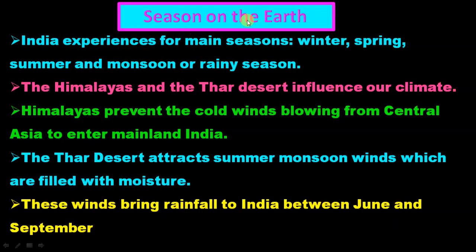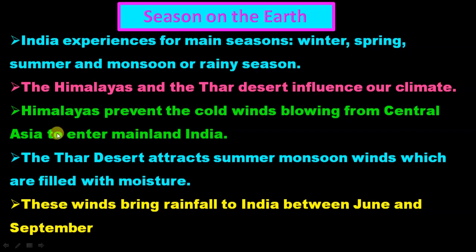Seasons on the earth. India experiences four main seasons: winter, spring, summer, and monsoon or rainy season. The Himalayas and the Thar Desert have an influence on India's climate. The Himalayas prevent cold winds blowing from Central Asia from entering mainland India.